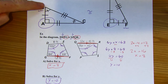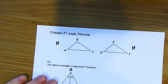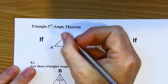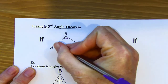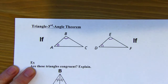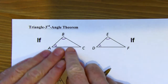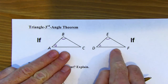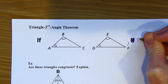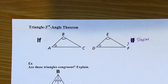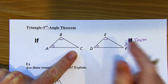I like to use dashes to show congruent angles, but the book sometimes uses swooshes. This is called the Triangle Third Angle Theorem. It says that if you have two different triangles where you've got two sets of congruent angles, then your remaining set of angles is going to be congruent as well. So angle C is going to be congruent to angle F.